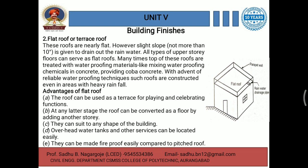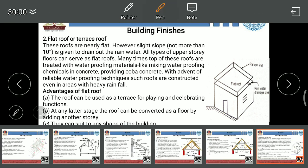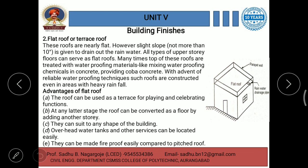The first type, pitched roof or sloping roof, we have already discussed in the last lecture. The second major type of roof is flat roof or terrace roof. These roofs are nearly flat, as the name itself indicates. They have a negligible slope — however, a slight slope of not more than 10 degrees. The slope, maximum up to 10 degrees, is given to drain out the rainwater from the roof.